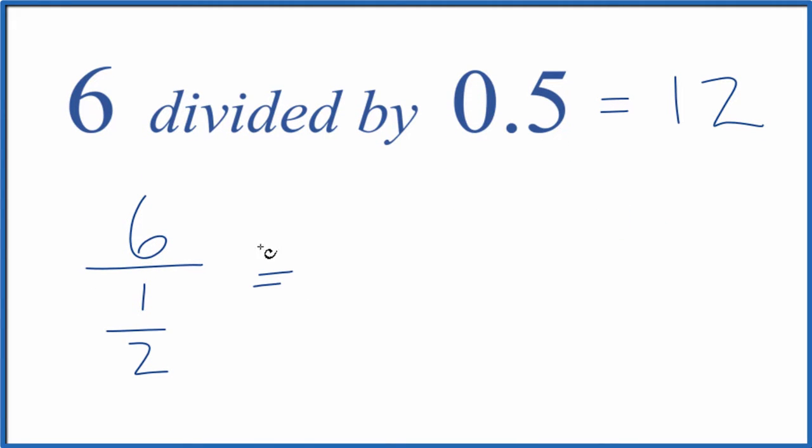So when we're dividing by a fraction, we take our number and we multiply it by the reciprocal. The reciprocal of one half is two over one. So we flip the numerator and the denominator. Six times two over one, that equals 12 over one, which is just 12.